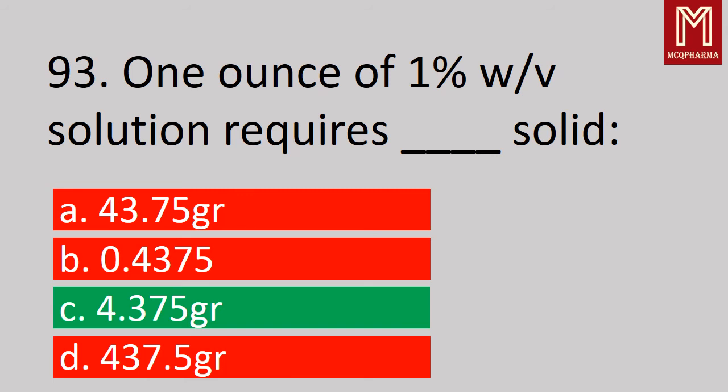Next question, one ounce of 1% weight by volume solution requires — correct answer, Option C: 4.375 grains solid.